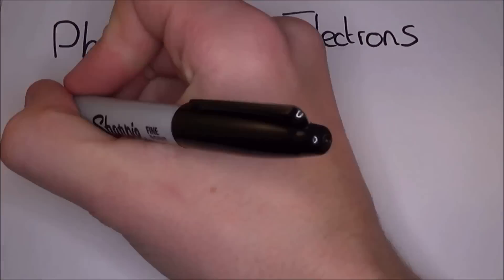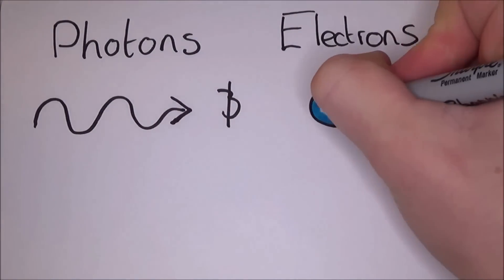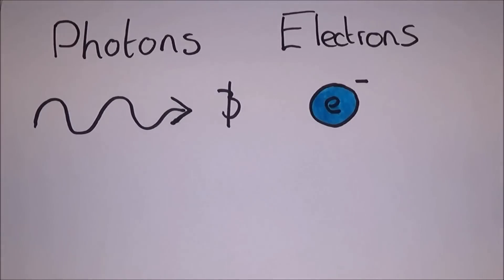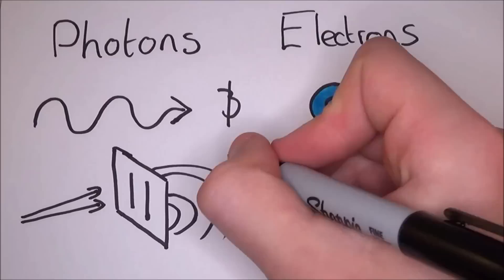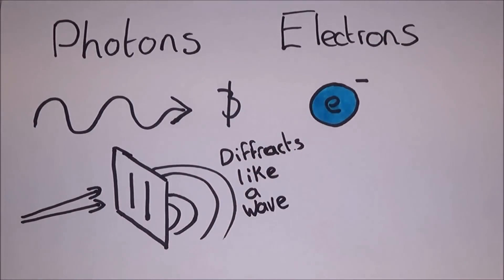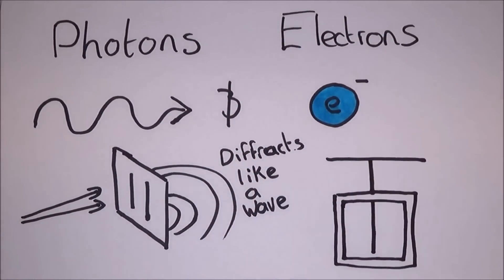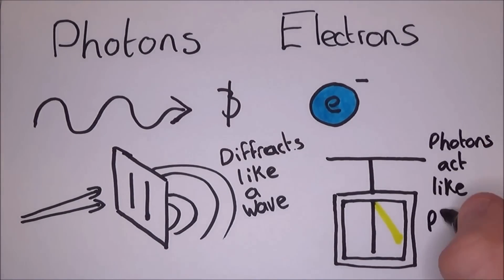To start off at the very beginning, we need to understand that photons and electrons are both waves and particles. The experiment proved that electrons act as particles when they are being watched, but act like waves when they are not. And the photoelectric effect was used to prove that light can act as a particle.